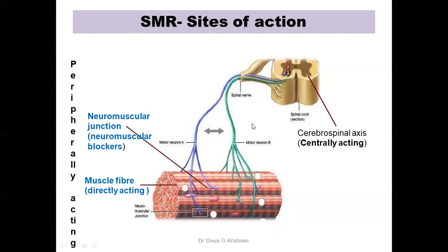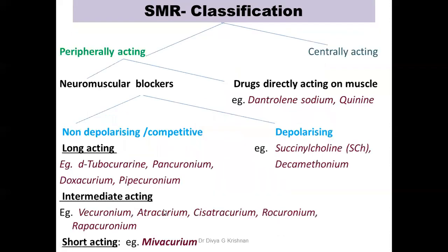They can act either centrally or peripherally. Among the peripherally acting skeletal muscle relaxants, they can act either at the neuromuscular junction or directly on the skeletal muscle fibers. Now let us look at the classification of SMRs, which is based on the site of action. Examples of drugs directly acting on skeletal muscle fibers are dantrolene sodium and quinine.